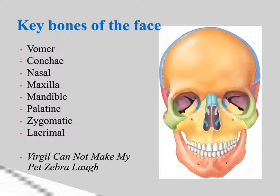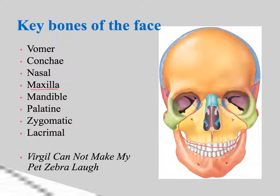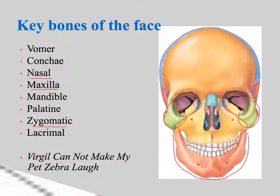Moving on to the bones of the face — there are many, but you only need to know four. The maxilla forms your upper jaw below your nose — there are two maxilla bones that come together there. The zygomatic bones provide your cheekbones, and again there are two. The nasal bone provides the bridge of your nose — most of the nose is cartilage but it starts with this bone. And the mandible is your jaw bone, the only bone on your face that moves. All four of these are ones you can feel on yourself.